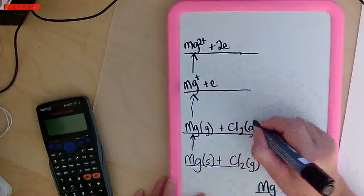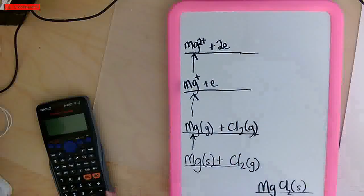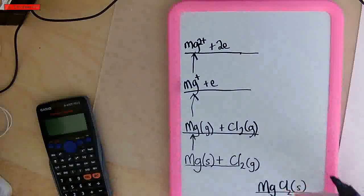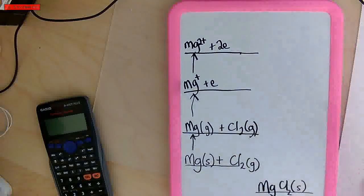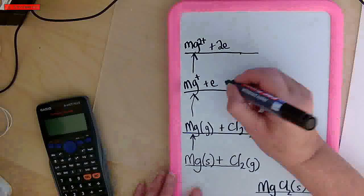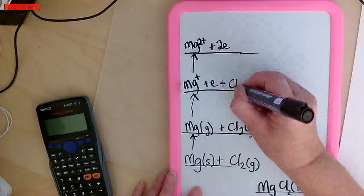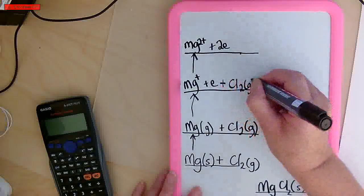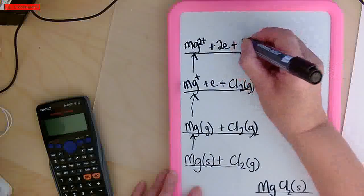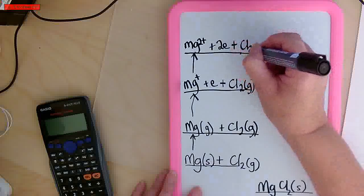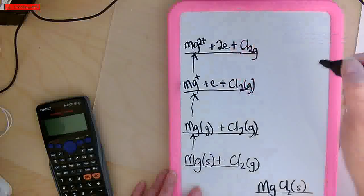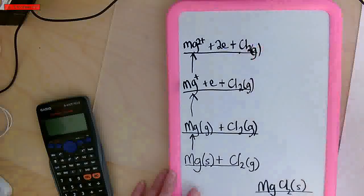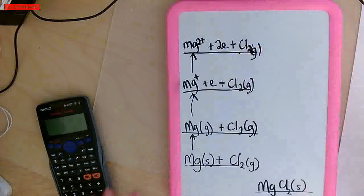I didn't do anything with the chlorine, but I do need the chlorine on that line — that's convention and that's what you'll be marked on. If you don't put the chlorines in, even though they haven't taken part in any transformation, you will lose marks. So we'll put the chlorines in now that I've done all the transformations on the metal.